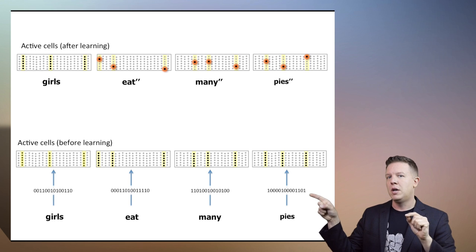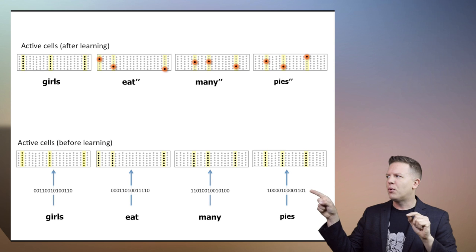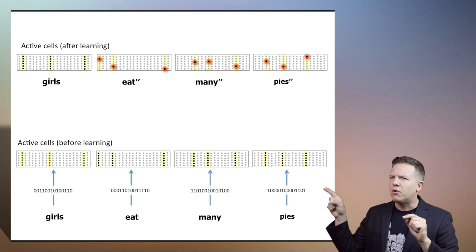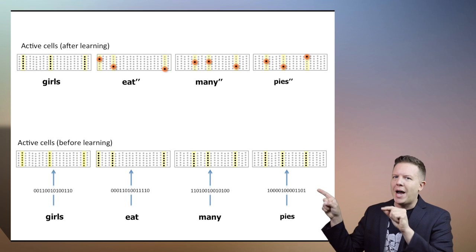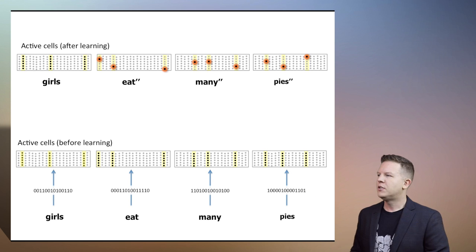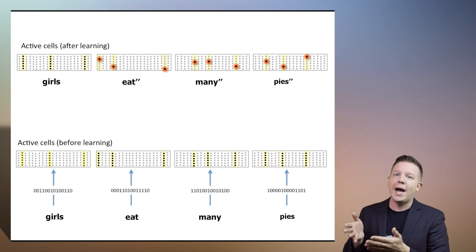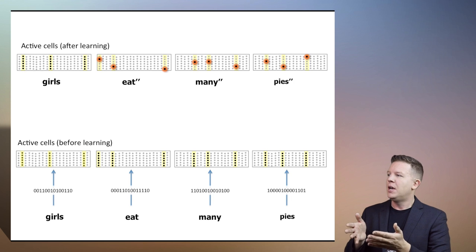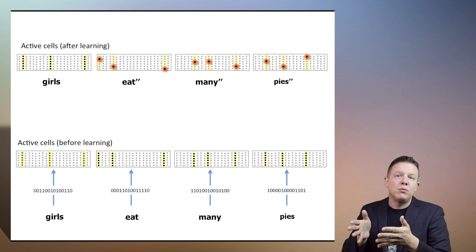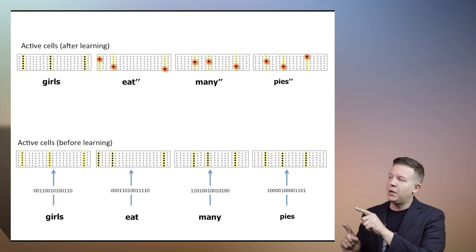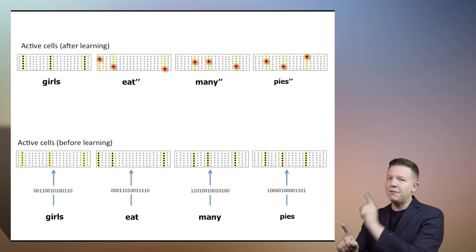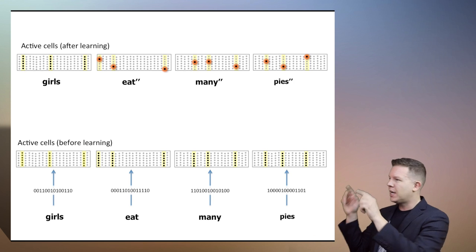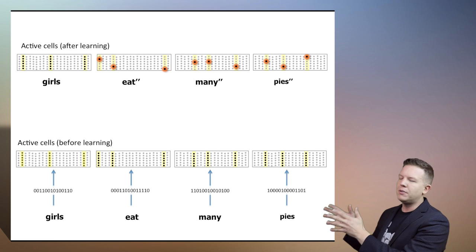which is in the context of girls. So we get this temporal information of girls passing all along this temporal pattern. So even 'pies double prime' is pies within the context of many double prime within the context of eat double prime within the context of girls.